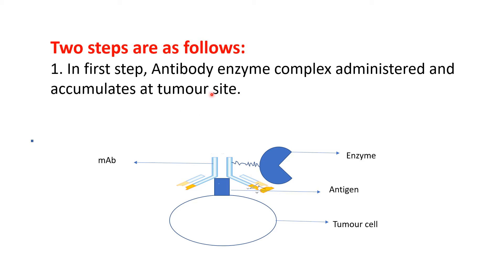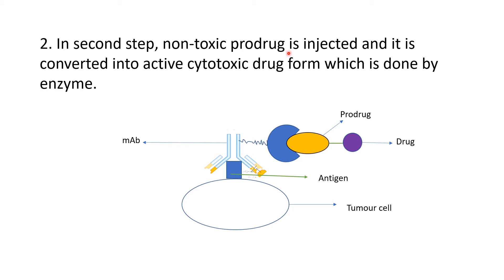The mechanism of ADEPT follows a two-step reaction. In the first step, the antibody-enzyme complex is administered and accumulated at the tumor site. On the surface of the tumor cell, the antigen is present, and when we administer the antibody-enzyme complex, the antibody gets attached to the antigen on the tumor cell surface. In the next step, a non-toxic prodrug is injected. By the action of the enzyme, this non-toxic prodrug is converted into a cytotoxic agent, which further kills the tumor cells.